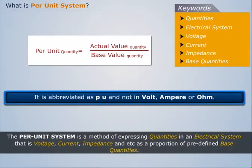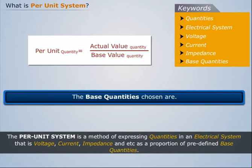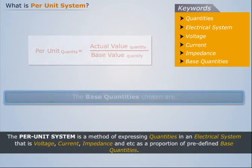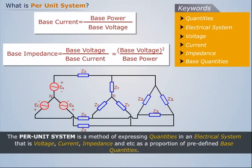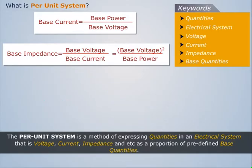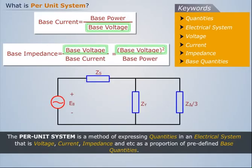The base quantities chosen are: VA base or P base is three-phase apparent power in volt-ampere base that is common to the entire circuit. Voltage base or V base is the line-to-line base voltage.